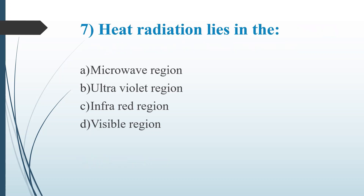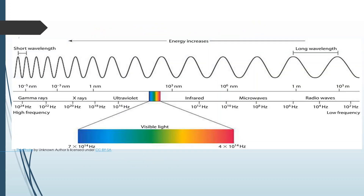Seventh Question: Heat radiation lies in which region? Option A: Microwave region, Option B: Ultraviolet region, Option C: Infrared region, Option D: Visible region. Answer is Option C, Infrared region. Heat radiation has high wavelength, which falls in the infrared region. The electromagnetic spectrum order is: Gamma rays, X-rays, Ultraviolet, Visible, Infrared, Microwaves, Radio waves.